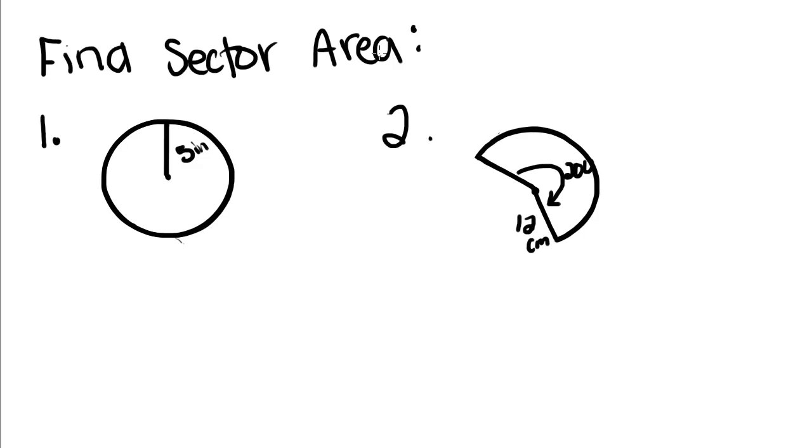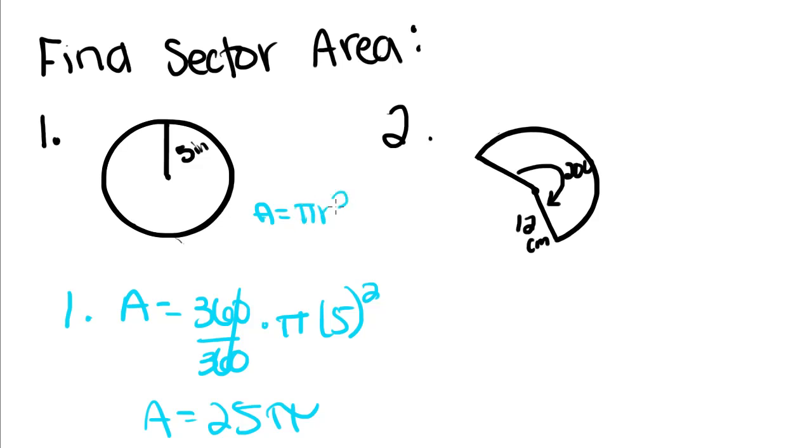Find sector area. We're finding the area of this whole circle. There's 360 degrees in a circle. So 360 over 360 times pi R squared. That cancels to 1 and you just get 25 pi for your answer. Which is the same thing as if we just use the plain old area formula, which is pi R squared. We'd still get 5 squared times pi, which is 25 pi.